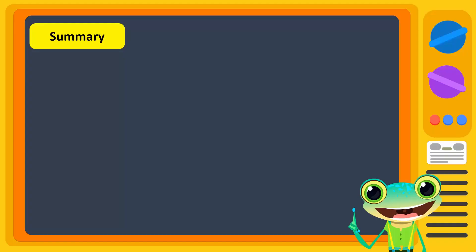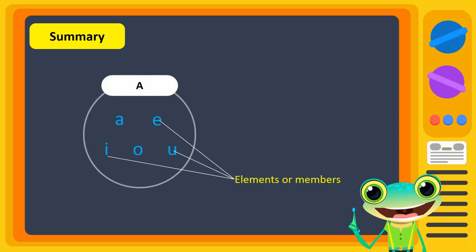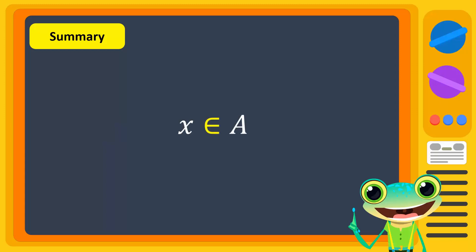To summarize: a set is a collection of well-defined and distinct objects or numbers. Objects of a set are called elements or members. Sets are usually represented by capital letters while elements by small letters. To show that an element belongs to a set, we use this notation: element x belongs to set A.